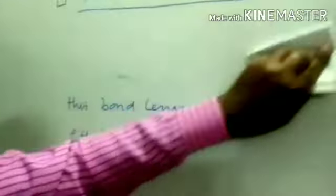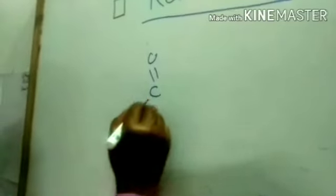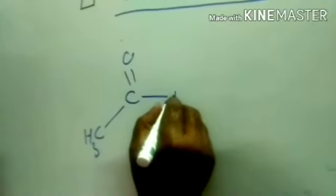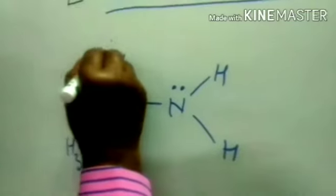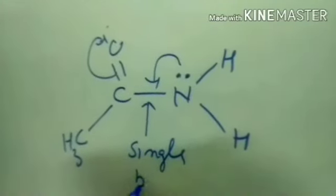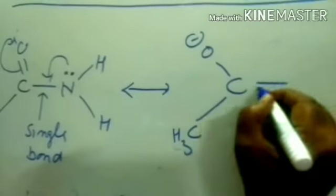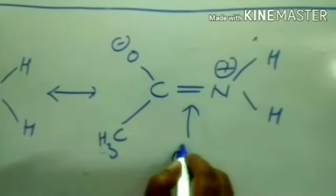The answer is, in accordance with the above facts: in acetamide, there is resonance. First it is a single bond; after resonance, it becomes a double bond character.